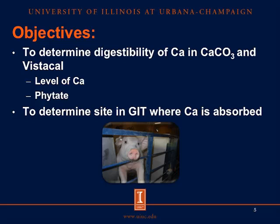Therefore, the objectives of this experiment are to determine digestibility of calcium in calcium carbonate as an inorganic calcium source and Vistacal as an organic calcium source. We want to know the effect that the level of calcium and the level of phytate have on the digestibility of calcium in these two sources. Also, the other objective is to determine the site in the gastrointestinal tract where calcium is absorbed.